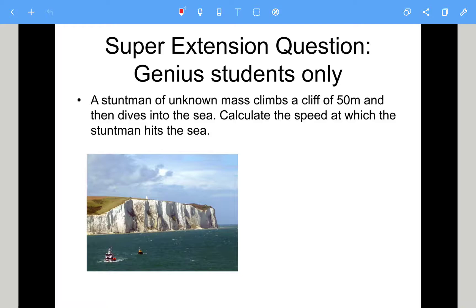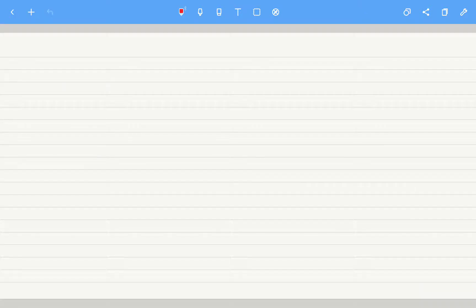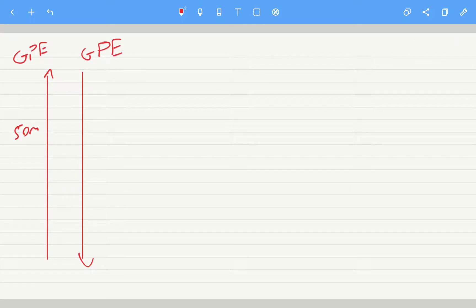Okay, and then I'll take you through the answers. So we know this stuntman's climbed a height of 50 meters. We don't know his mass, so he's climbed 50 meters and then he jumps off, or dives off, because obviously he's a maniac. The only thing that we know is the energies that are involved. So we gain gravitational potential energy, and then that GPE will convert into kinetic energy.